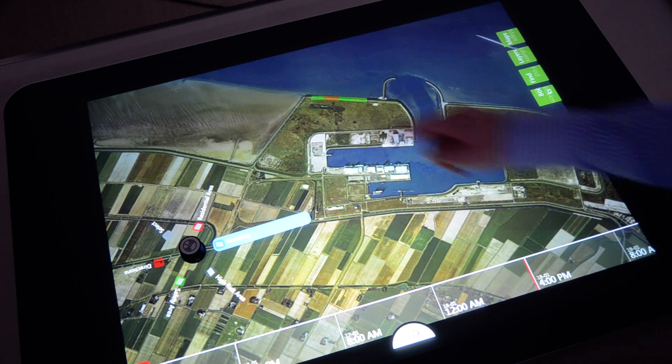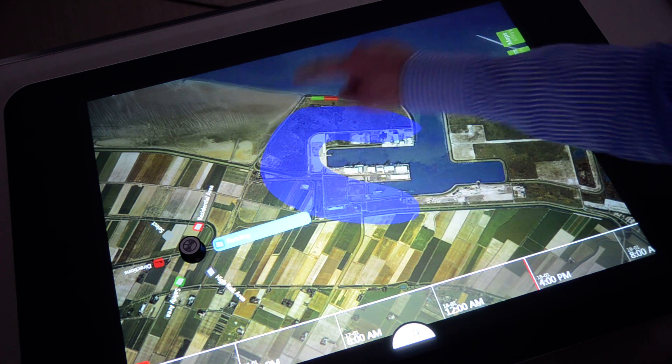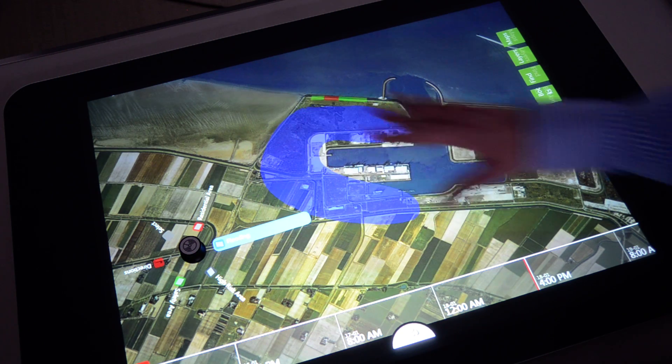Now you have flooding selected. And I can draw on the map using my fingers and indicate this area is going to be flooded.